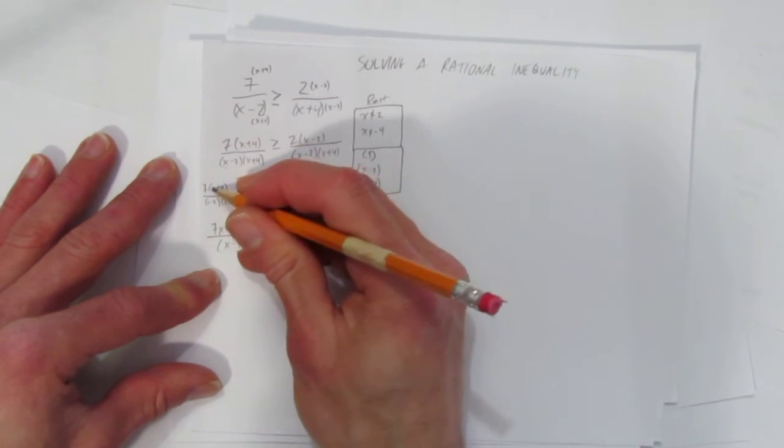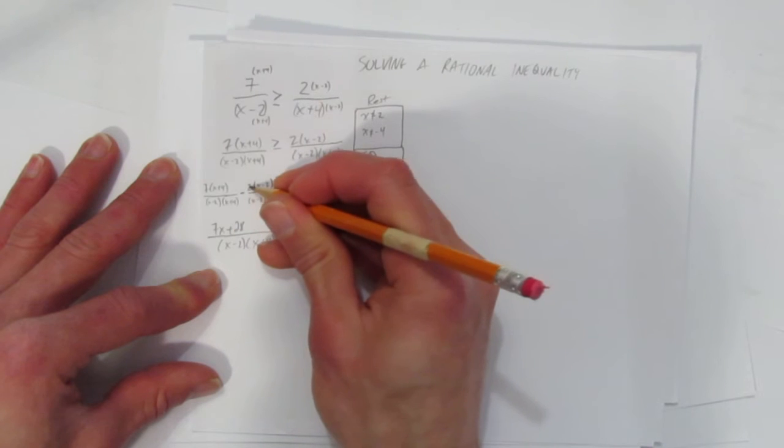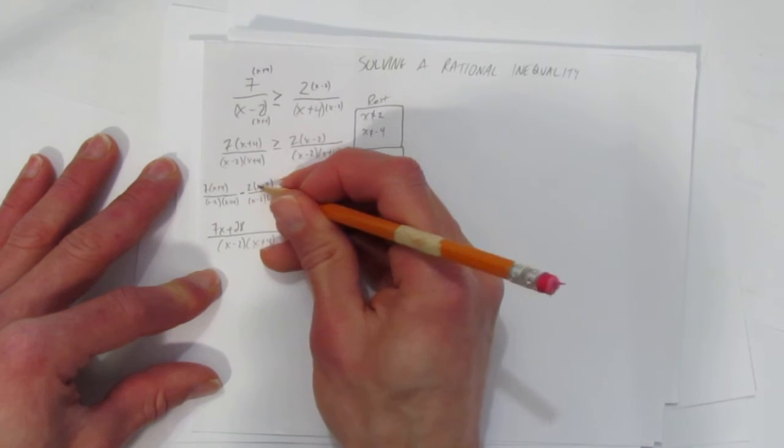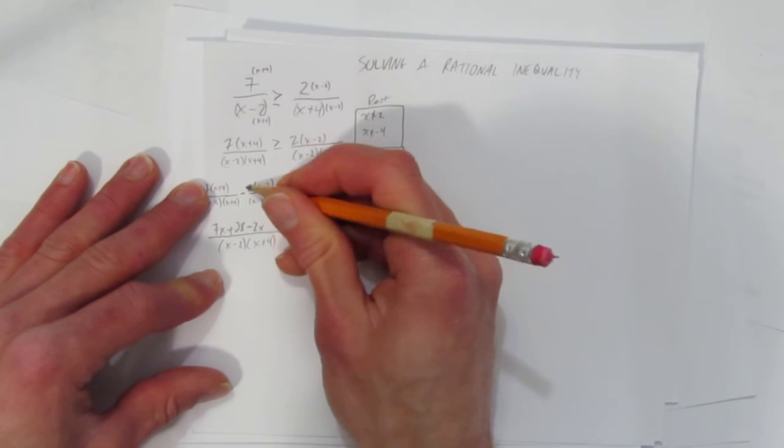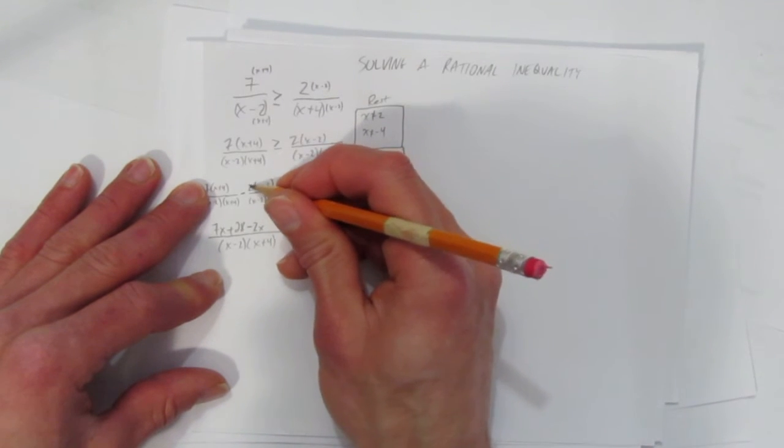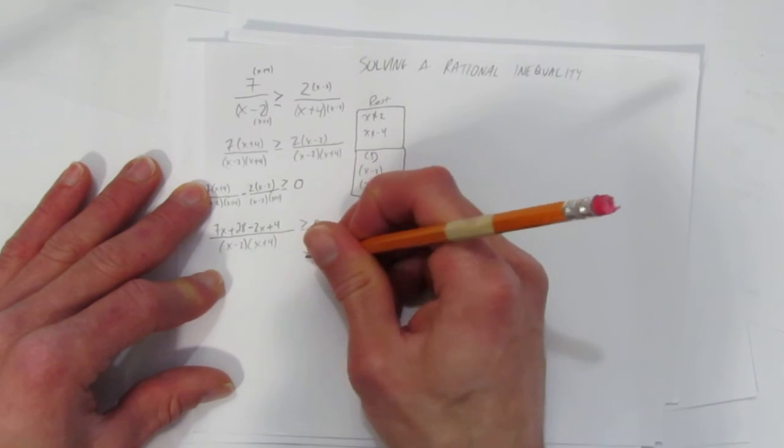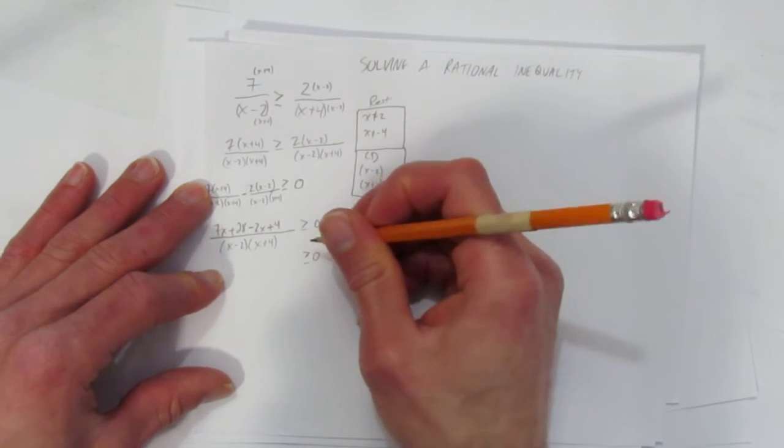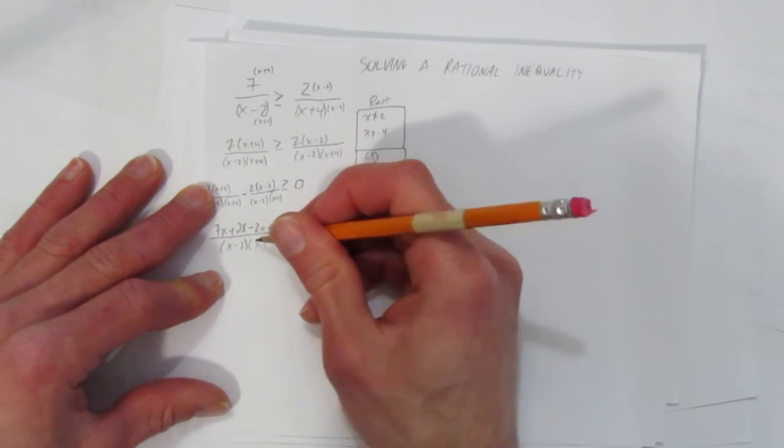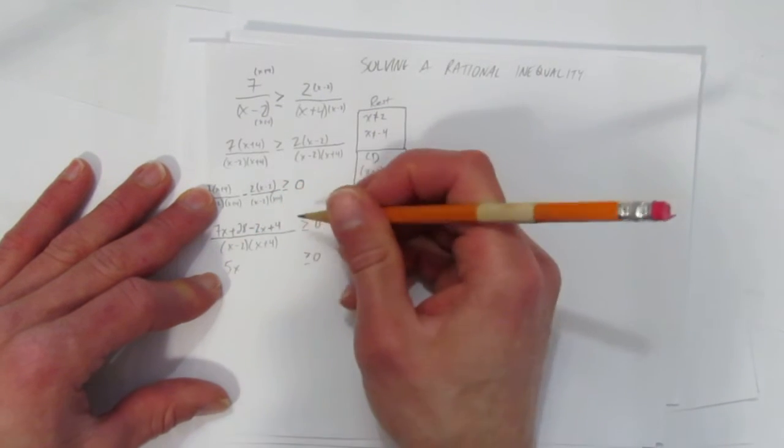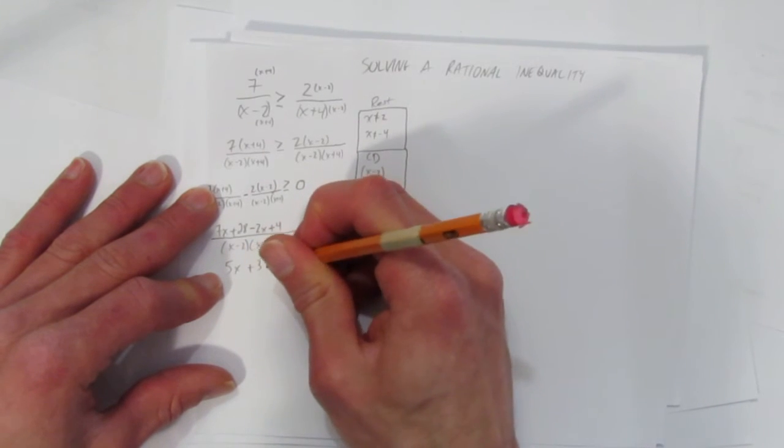7 times x, 7x. 7 times 4, 28. And include this negative with this 2. Negative 2 times x, negative 2x. This is a common mistake, people forget here. Negative 2 times negative 2 plus 4. Make sure you get that whole piece. Now we can put like terms together. 7x take away 2x is 5x, and 28 plus 4 is 32.